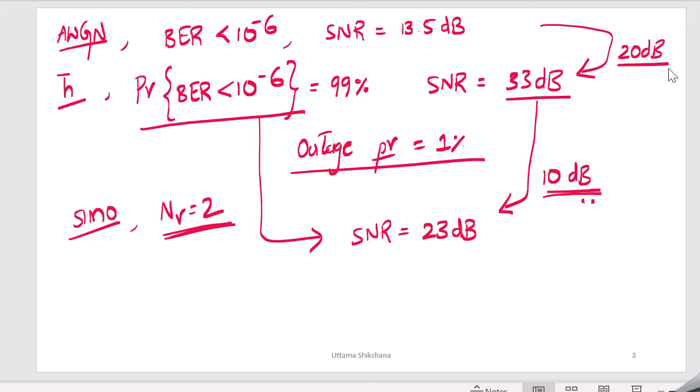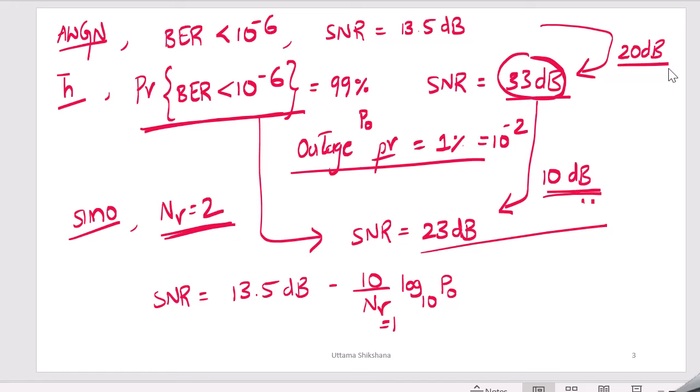We derived the formula for SNR in a generic way for any number of Nr antennas. That was equal to 13.5 dB minus 10 by number of receive antennas log to the base 10 and p naught. P naught was our outage probability, in this case it is 10 raised to minus 2. If you substitute Nr is equal to 1 then we will achieve this 33 dB, and if we put 2 then we will get around 23 dB. Now let us see for Nr is equal to 4, in this case the SNR will be coming to around 18 dB.